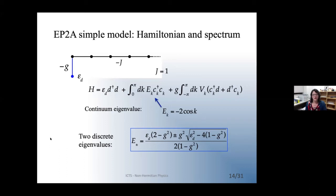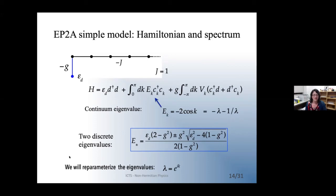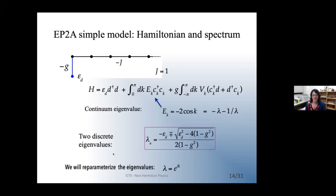We can obtain the discrete eigenvalues from the Green's function method. To evaluate the dynamics at the EP2a, we reparametrize the energy eigenvalues using an auxiliary variable lambda = e^{ik}, so cosine takes a simple form in terms of lambda. The discrete eigenvalues also transform into a convenient form in lambda, and the square root in that expression gives the location of the EP2a — there are two EP2as, one at each band edge; we focus on the lower threshold.